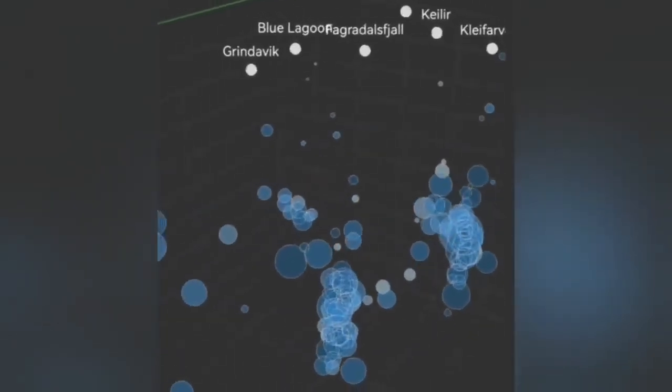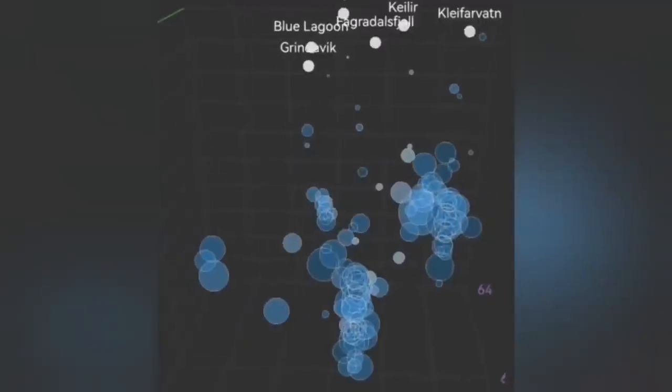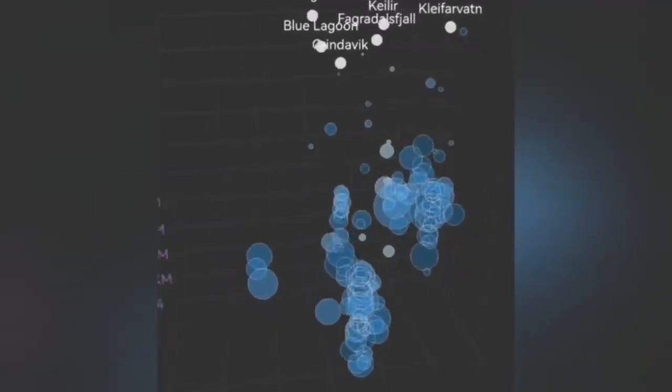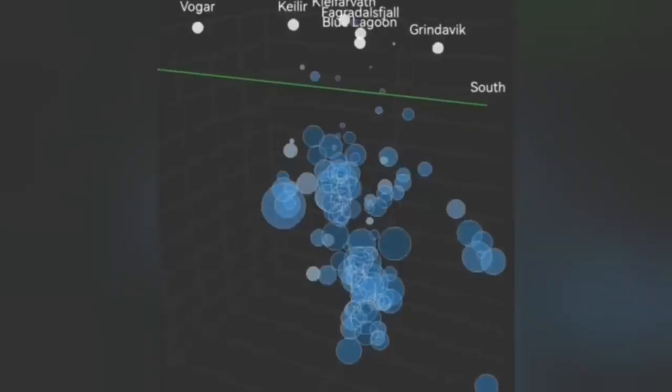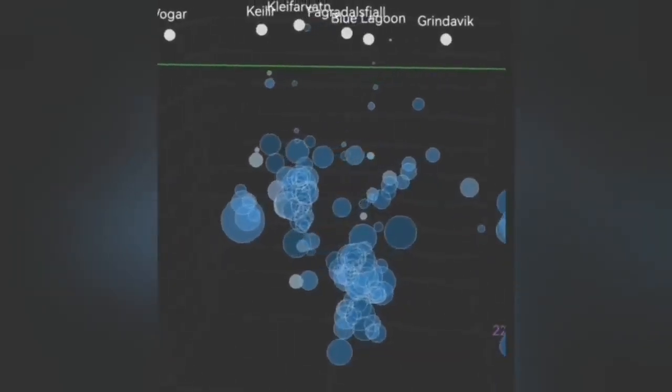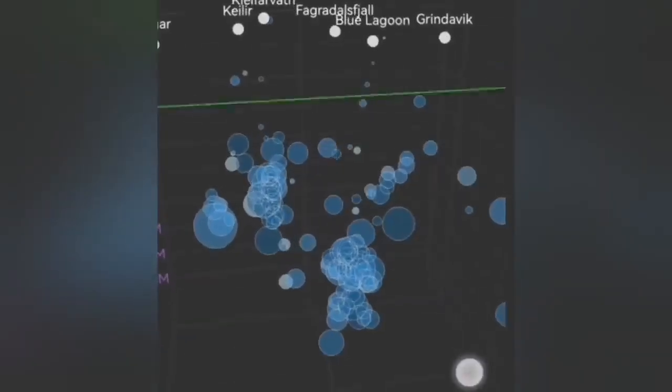This is today's. You can see that the same beam of circles is what we can call as a dike moving upward and then through a transgressive sill moving toward Grindavik.